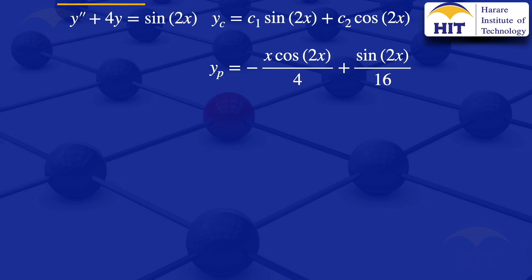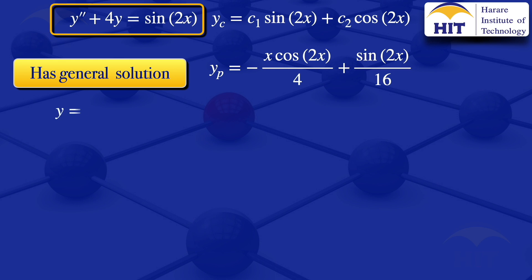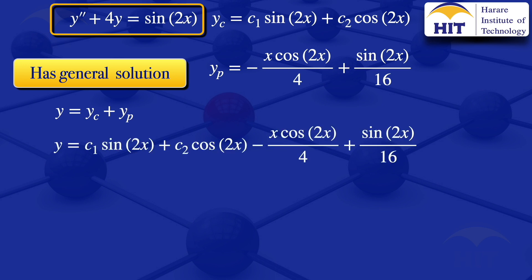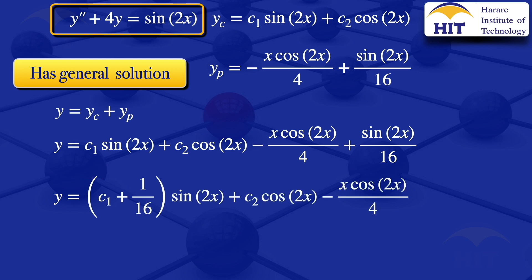For the general solution of the non-homogeneous ODE, we add the complementary solution and the particular solution: Y = c1·sin(2x) + c2·cos(2x) - x·cos(2x)/4 + sin(2x)/16. Combining like terms, the final general solution is Y = (c1 + 1/16)·sin(2x) + c2·cos(2x) - x·cos(2x)/4.